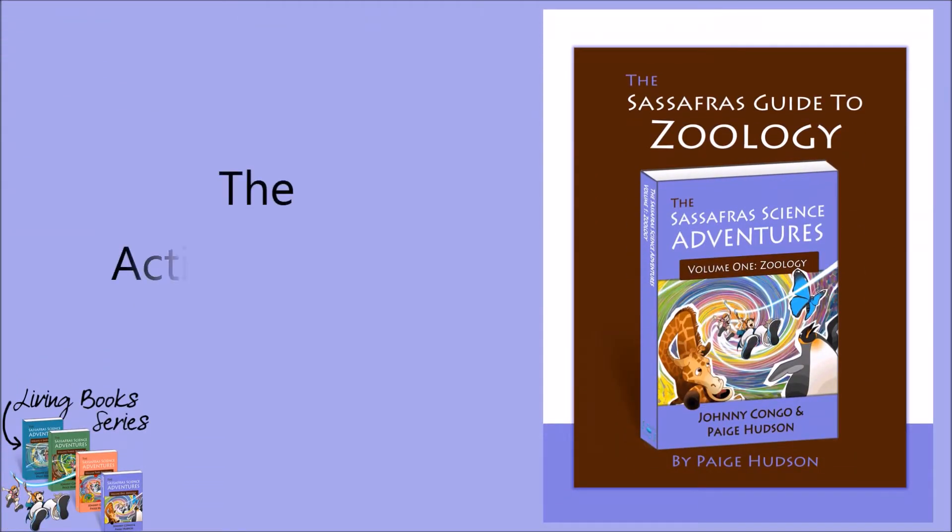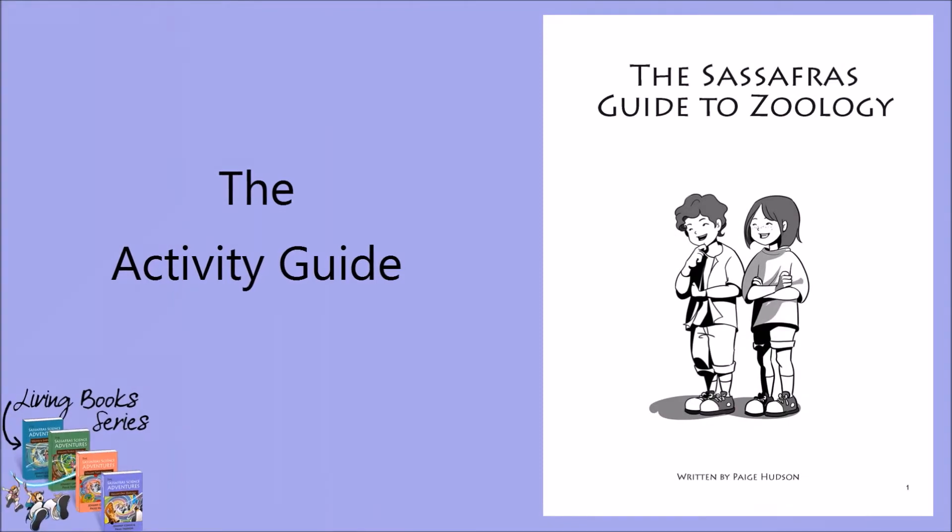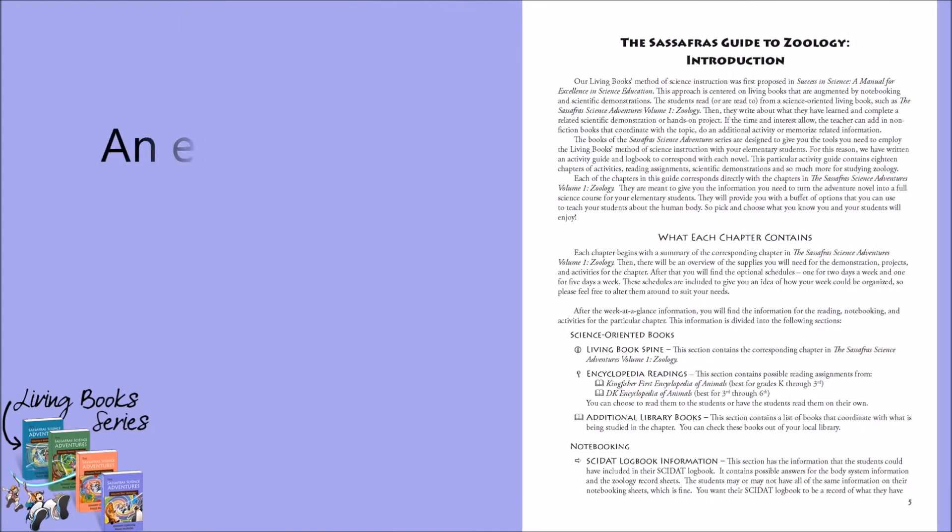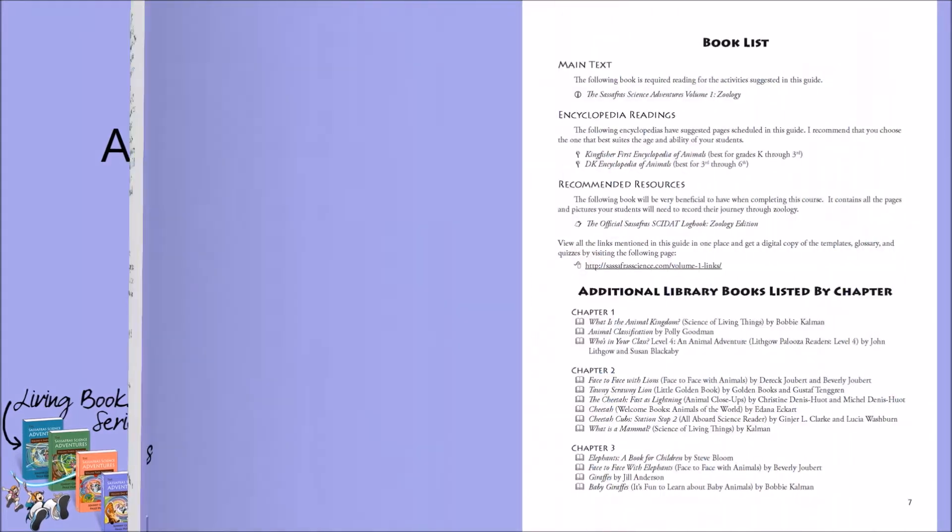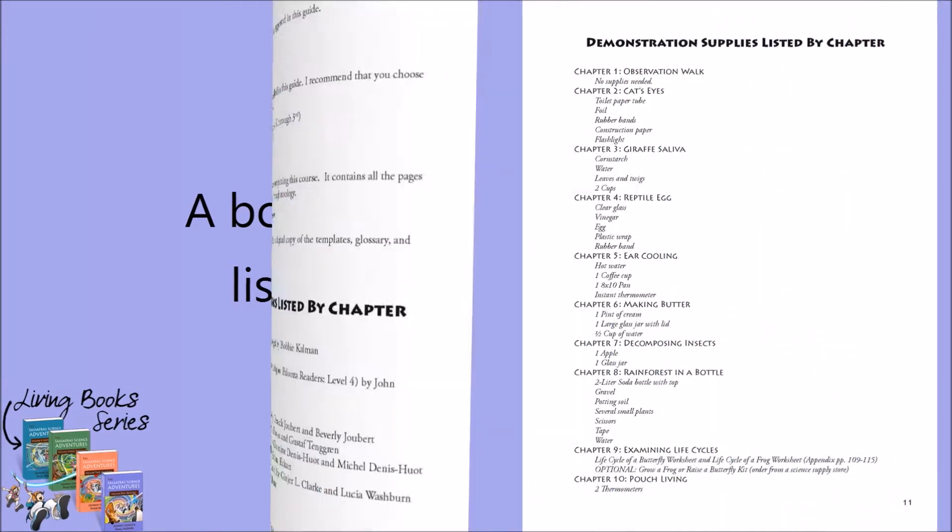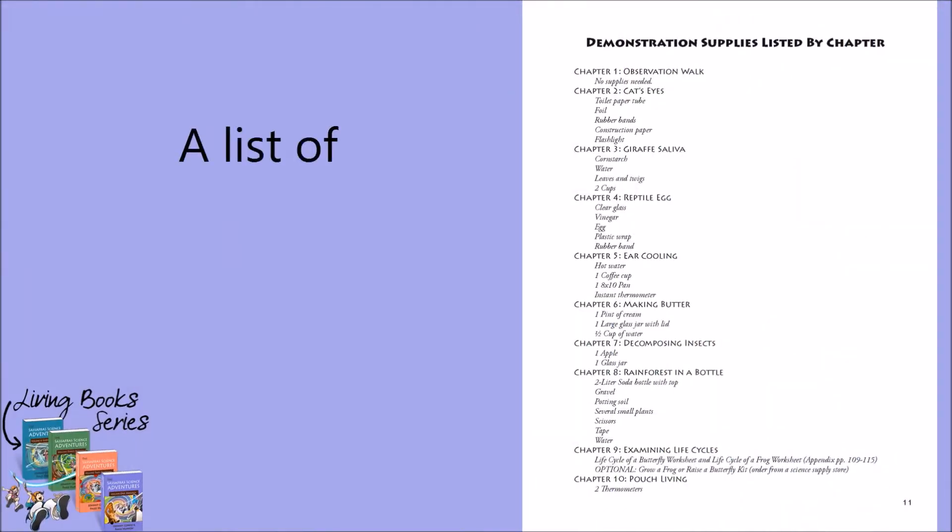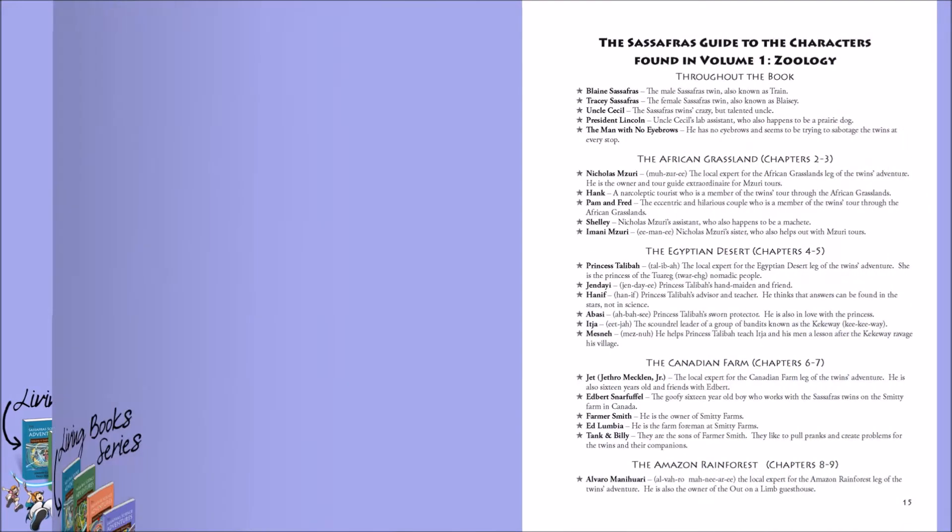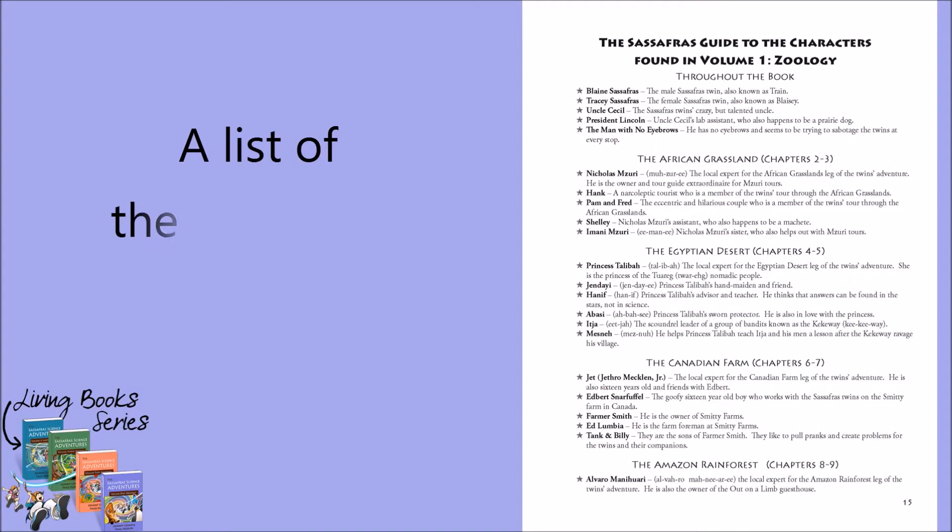Let's take a look at the Activity Guide and Logbook. Our Sassafras Science Activity Guides begin with a thorough explanation of the components in the program. This is followed by the book list, with the required books and a list of optional library books. Then, you will find a list of demonstration materials and project supplies broken out by unit and week. The list of characters rounds out the introductory materials.